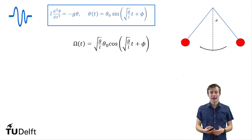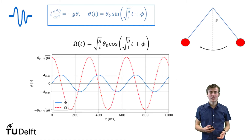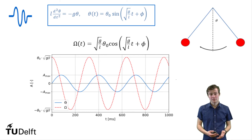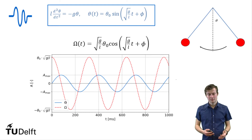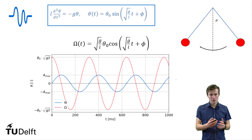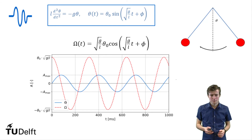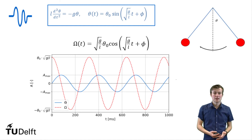Here we see our expression for the angular velocity: it is the square root of g over l times theta zero times the cosine of the square root of g over l times t plus phi. We can plot it together with our position function, and we can see they are out of phase. The velocity is maximum when the position is zero, and the position is maximum when the velocity is zero. This makes sense because the cosine and sine are out of phase, but it also makes sense physically: when you are sitting on a swing and you are at the highest point, you are hanging in the air and not moving. The point where you are fastest is where you are closest to the ground, which is theta equals zero.